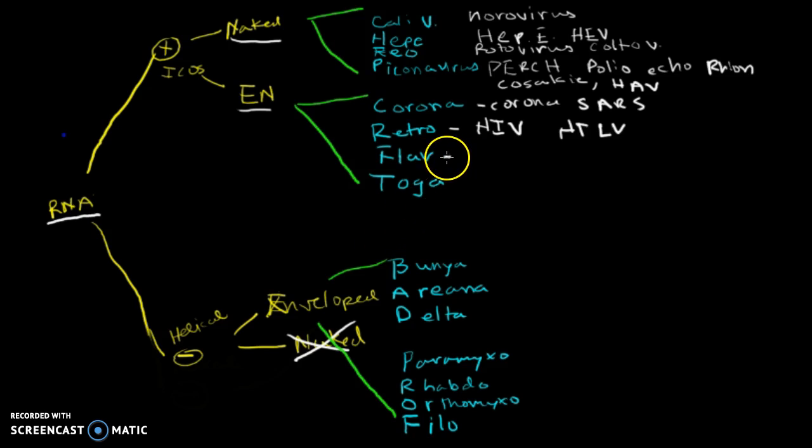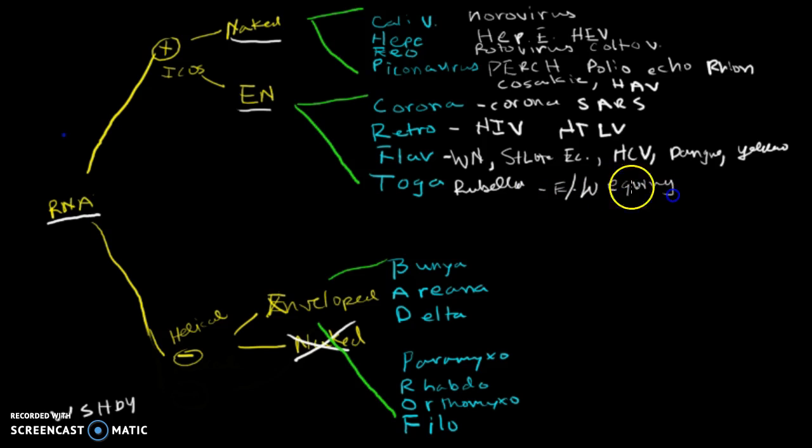Your flaviviruses. This one is kind of weird, just have to remember that Flava Flav's washed up. So you've got WSHDY, washed up. And here we'll go for West Nile, St. Louis encephalitis, hepatitis C, dengue, and yellow fever. In addition to that, you've got the togaviruses, which is rubella and Eastern and Western equine viruses. Think of rubella as a pretty woman with horses.